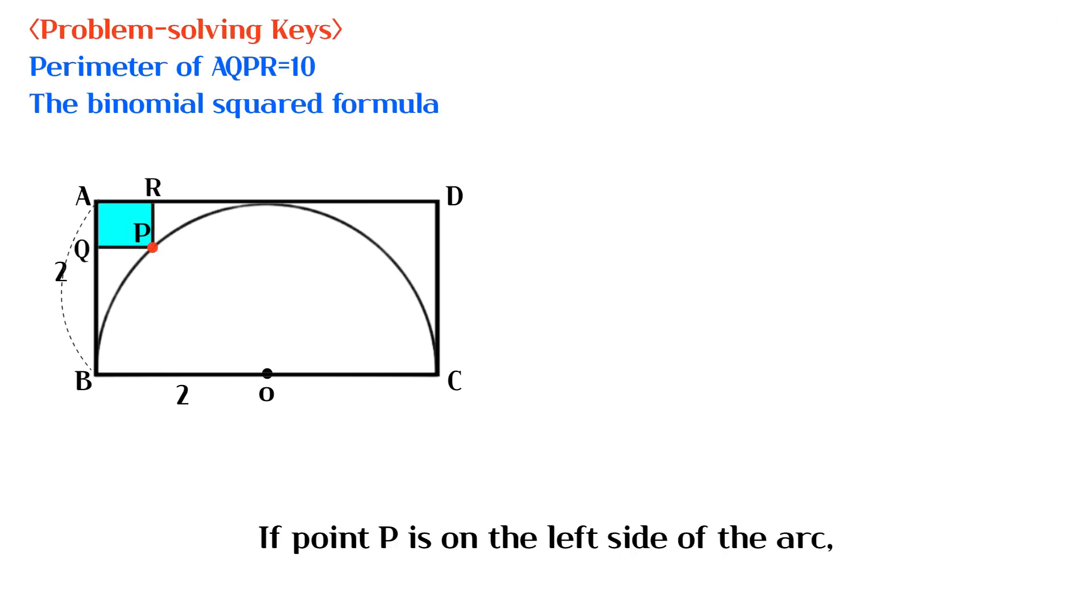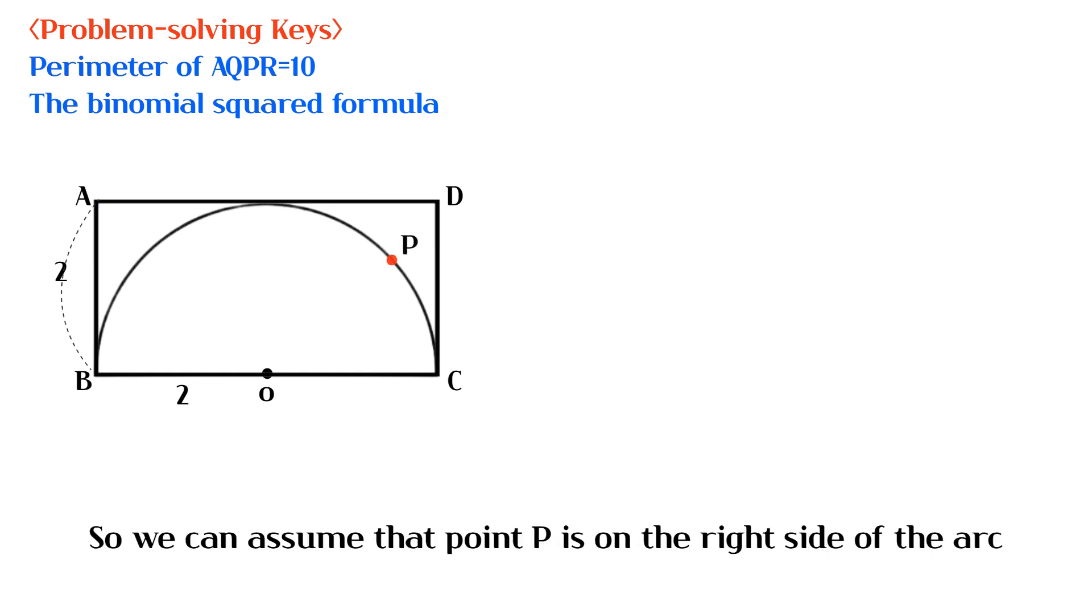If point P is on the left side of the arc, then the perimeter of rectangle AQPR cannot be 10. So we can assume that point P is on the right side of the arc.